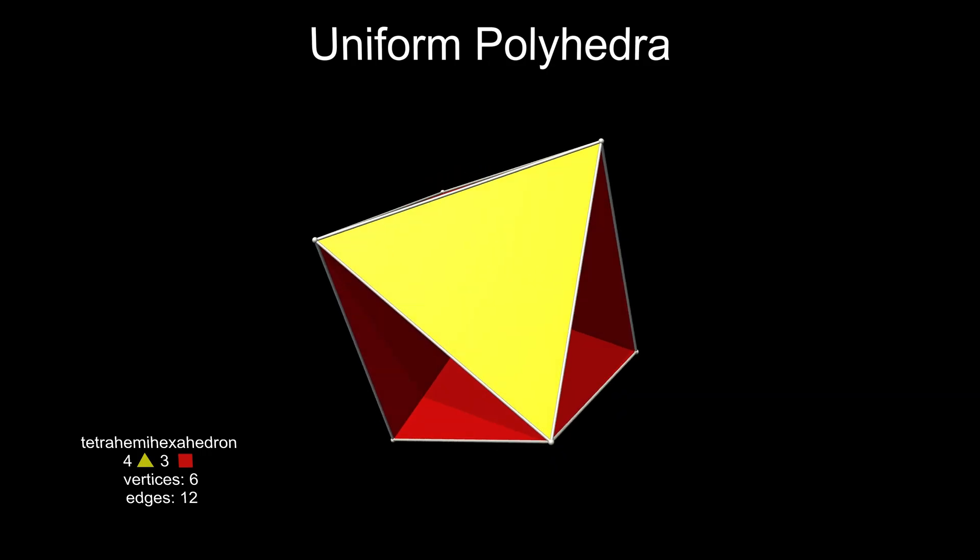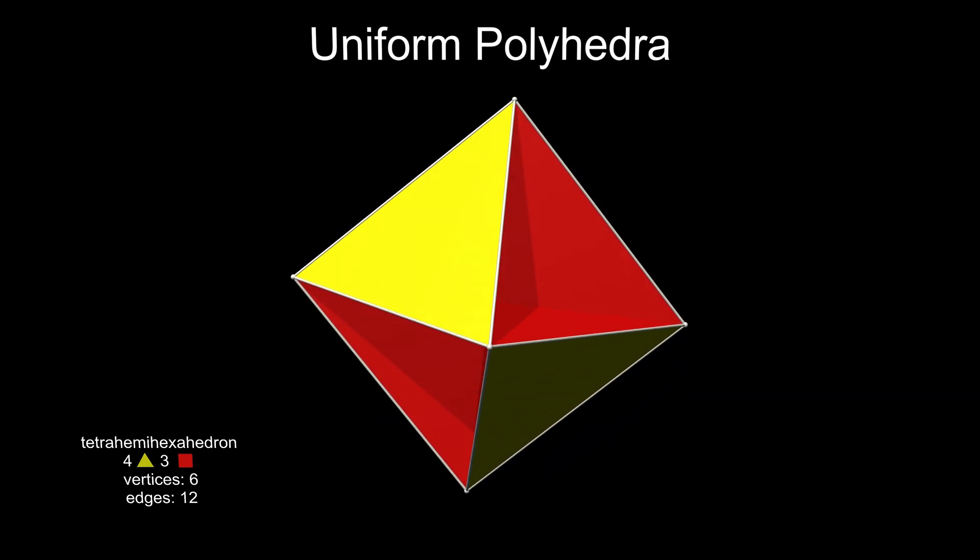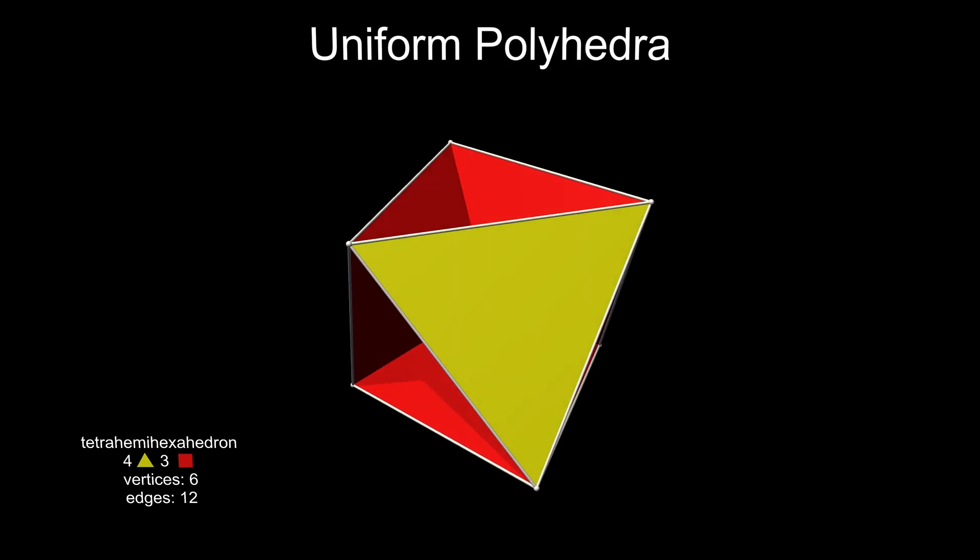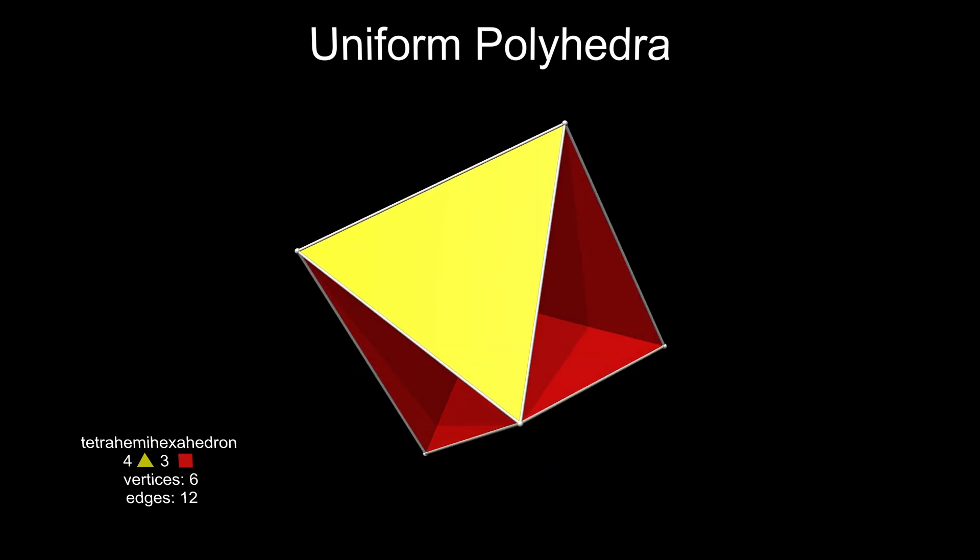This is an unusual figure in many ways. It has seven faces, the only uniform polyhedron with an odd number of faces, apart from some prisms.